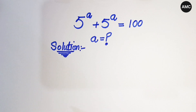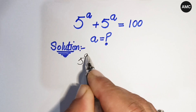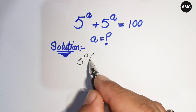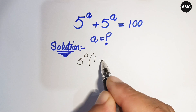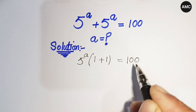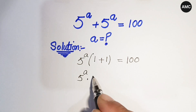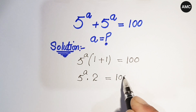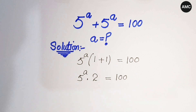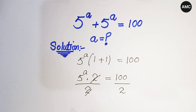Let's start our solution. First of all, we see that 5 to the power a is a common term, so we factor it out. Inside the bracket we get 1 plus 1, giving us 5 to the power a times 2 is equal to 100. Now dividing both sides by 2, this 2 cancels out.